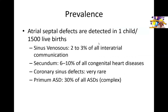The prevalence of atrial septal defects is one in every 1,500 live births. Sinus venosus defects represent two to three percent of all ASDs. Secundum defects are the most common, comprising six to ten percent of all congenital heart disease. The coronary sinus defect or unroofing of the coronary sinus is very rare — in my 20-plus year career I have seen probably four or five cases. Finally, primum ASDs represent about 30 percent of all ASDs and are the most complex, involving the ventricular septum, the mitral valve, the tricuspid valve, and other structures.